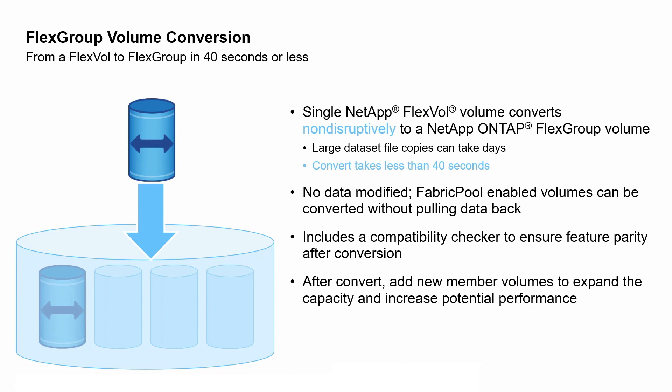NetApp ONTAP offers an in-place path to FlexGroup by allowing you to convert a FlexVol volume to a FlexGroup in less than a minute with minimal outage, regardless of the size of the data set or the number of files in that volume. That way you don't have to worry about copying files or freeing up additional capacity just to get a FlexGroup volume in place.